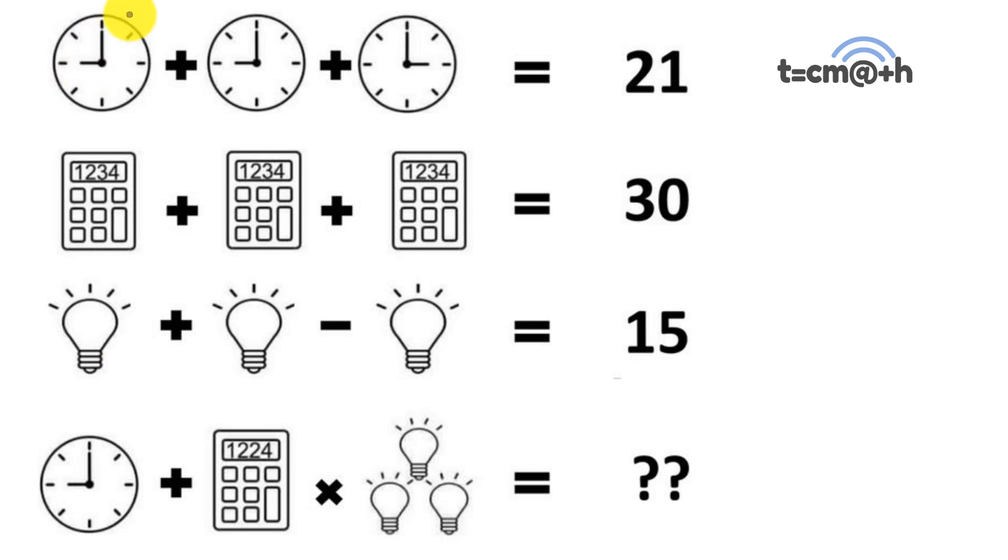All right, so let's go through this. First off, we have three clocks that add up to 21. We have three calculators that add up to 30. We have three light bulbs where we add one and then take it away, and this is equal to 15.